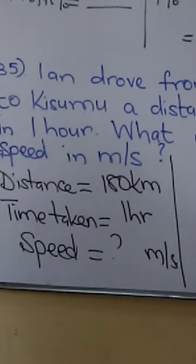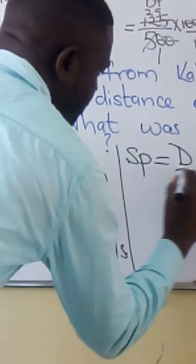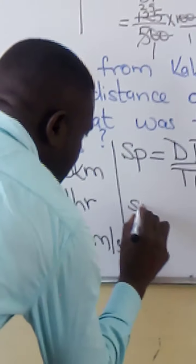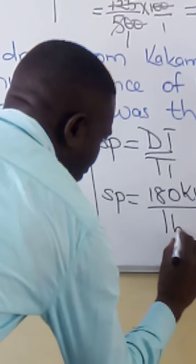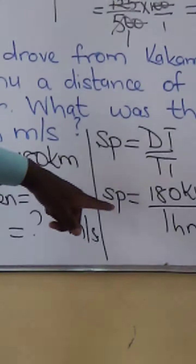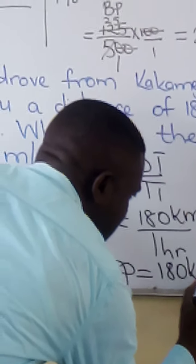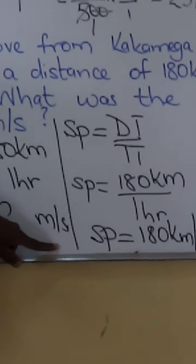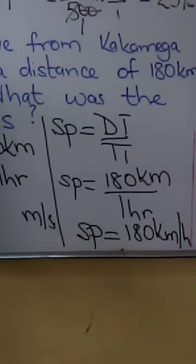The formula for finding speed: speed is equal to distance traveled over time taken. So the speed would be 180 kilometers over 1 hour, which gives us 180 kilometers per hour. Yet we are asked to find the speed in meters per second, so we need to convert the speed to meters per second.